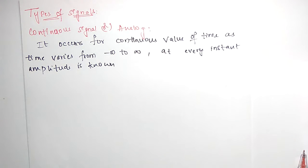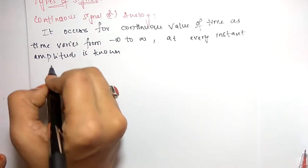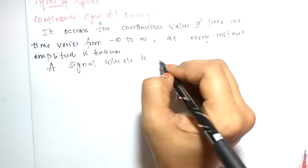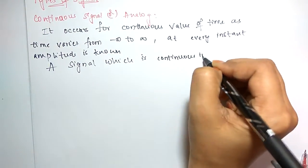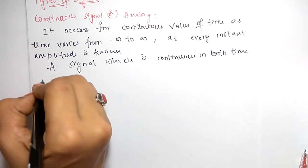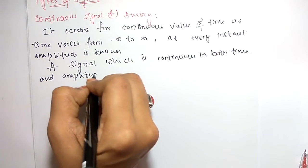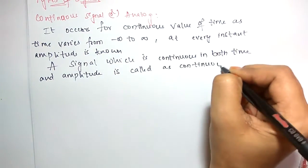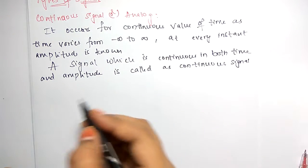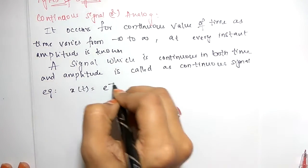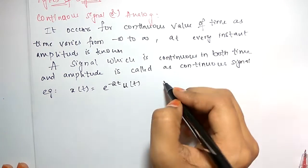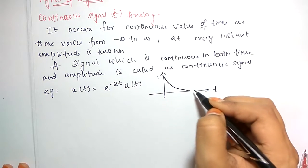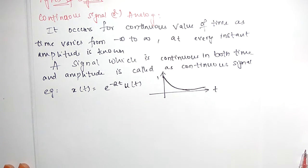A signal which is continuous in both time and amplitude is called a continuous signal. For example, x(t) = e^(-2t). If you take this signal, the graph shows amplitude starting at 1 and decreasing continuously towards infinity — this is a continuous signal.